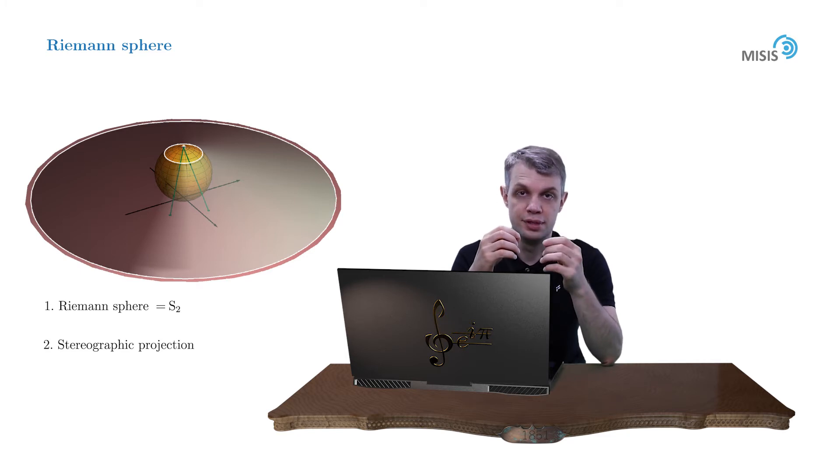we add an additional point to a complex plane, which we call infinity. And the image of this point on a sphere is a north pole of a sphere.